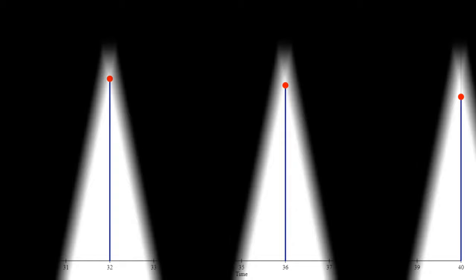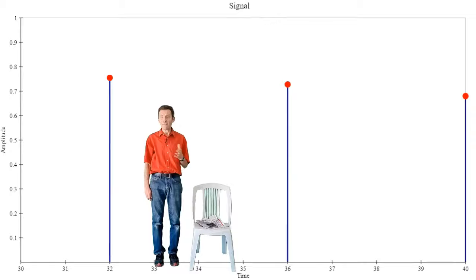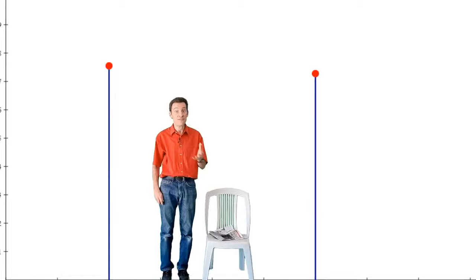We have absolutely no data about what is going on in the time between the samples. As the DFT and the FFT work in a similar way, what is true for the DFT must also be true for the FFT.